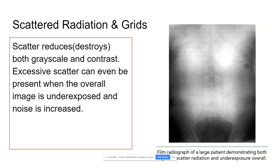Scatter is bad — that's all this particular slide is showing you. Scatter is going to destroy your contrast and shows up as noise, and you really can't fix it that well. Although they are creating new algorithms that allow, on certain studies, the ability to get rid of a grid you would usually use and just use a mathematical technique to help reduce noise from scattering. This is new and it's not going to show up on your registry for a long time, so I'm still going to talk about why we need to use grids.